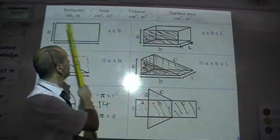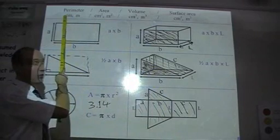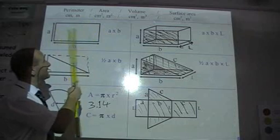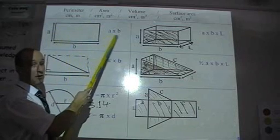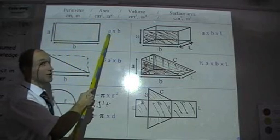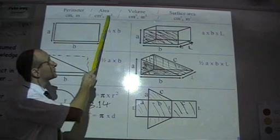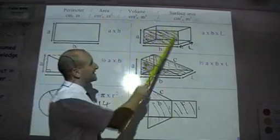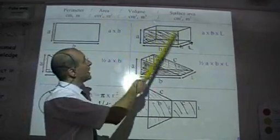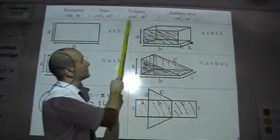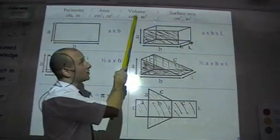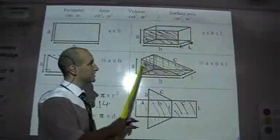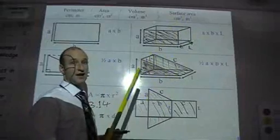So, to recap, we've looked now at perimeter, all the way around the outside of the shape. Area, the space inside the shape, usually multiplying, or always multiplying, two lengths together, that's why it's squared. Volume, which is the space inside the solid, and that is multiplying three lengths together, which is why you have units cubed. And surface area, which is the area of all the faces on a solid, added together.